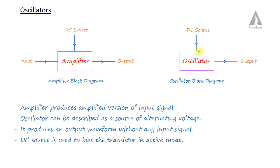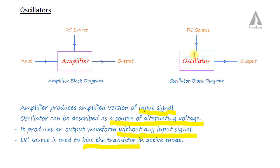Now the amplifier produces an amplified version of the input signal — when input is given, the amplifier gives the amplified output. But in oscillators, it can be described as a source of alternating voltage; it does not need any input signal. It produces an output waveform without any input signal. The DC source is used to bias the transistor. This is the major difference between amplifier and oscillator.